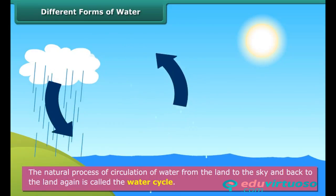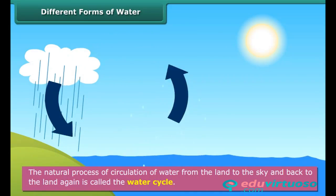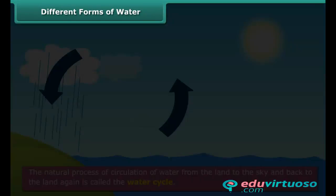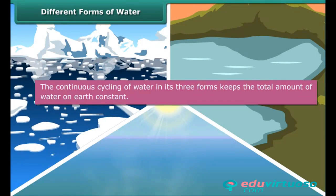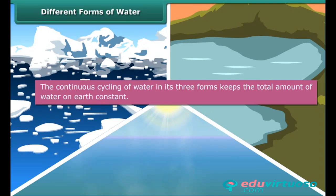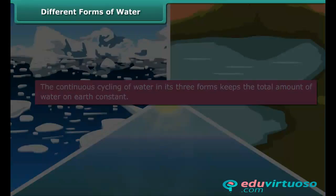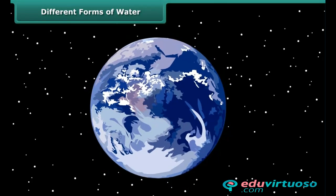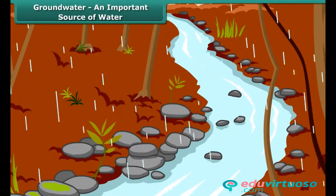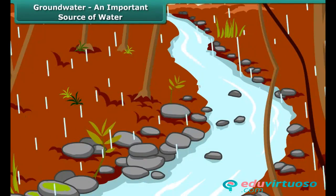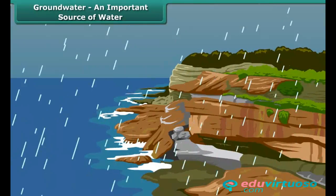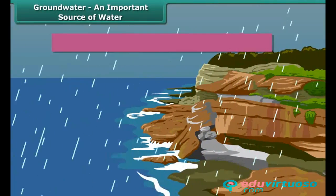The natural process of circulation of water from the land to the sky and back to the land again is called the water cycle. The continuous cycling of water in its three forms keeps the total amount of water on Earth constant, even when the whole world is using it. Not all rainwater flows into rivers and ultimately into oceans — some of it is absorbed by the soil.